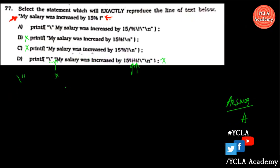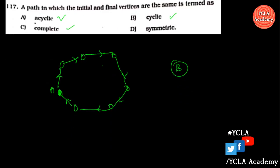Next, if you have a print statement with an escape sequence — for example, if you have double quote characters inside the string — there are two options available. After eliminating some options, we are left with the correct answer based on how double quotes are handled in escape sequences.